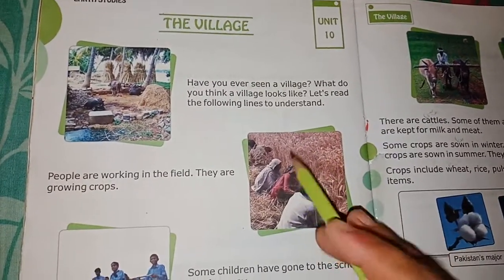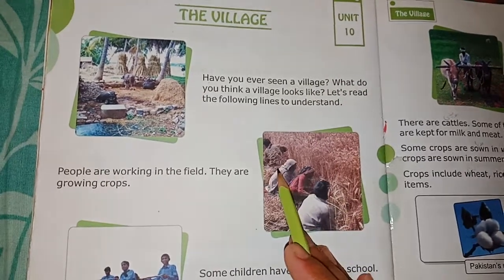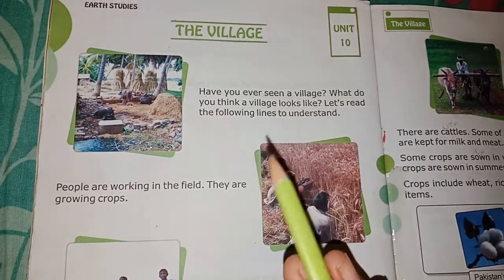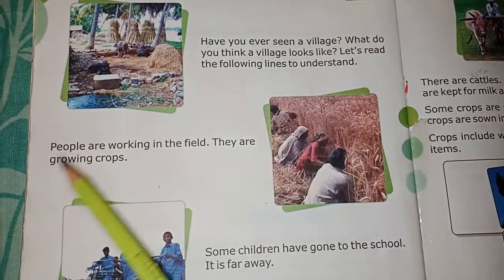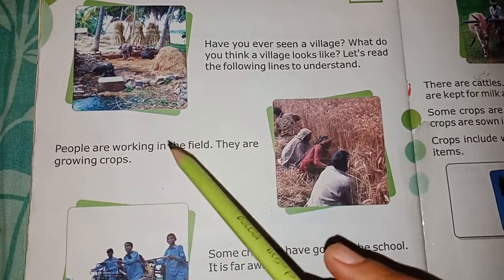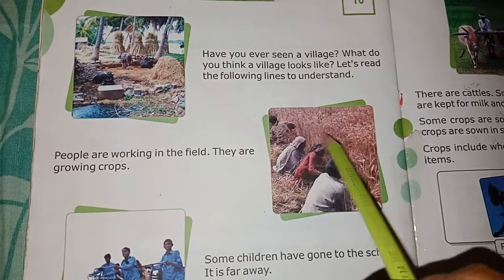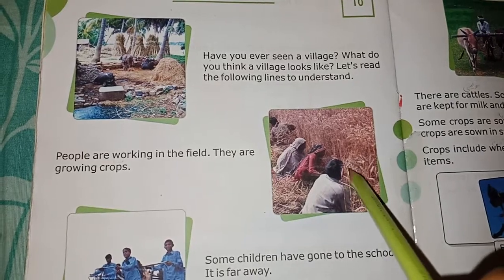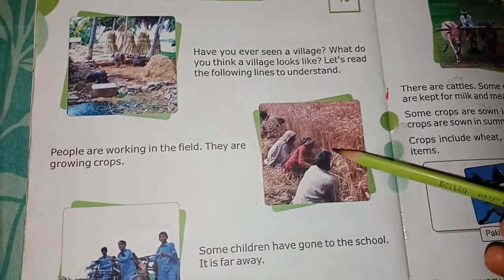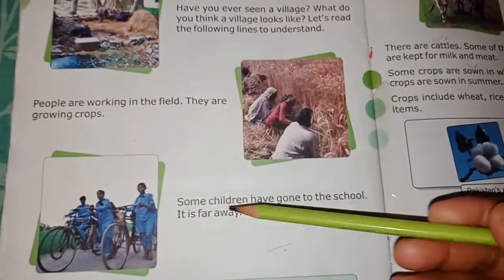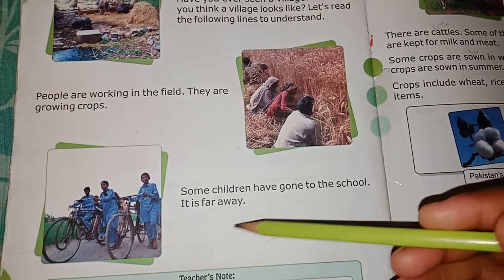Students, we have read this chapter before. So you know what a village looks like. In a village, people are working in the fields — وہ اپنی کھیتوں میں کام کرتے ہیں. They are growing crops — وہ فصلوں کو اگاتے ہیں. Some children have gone to school. It is far away.